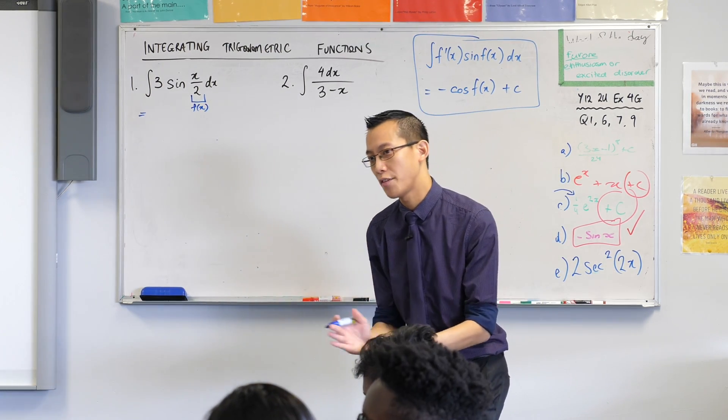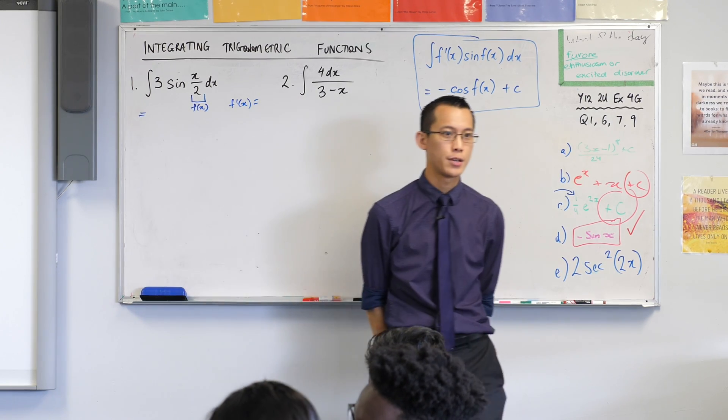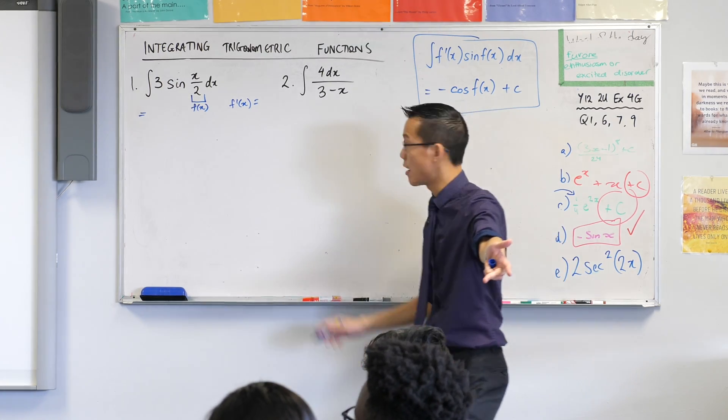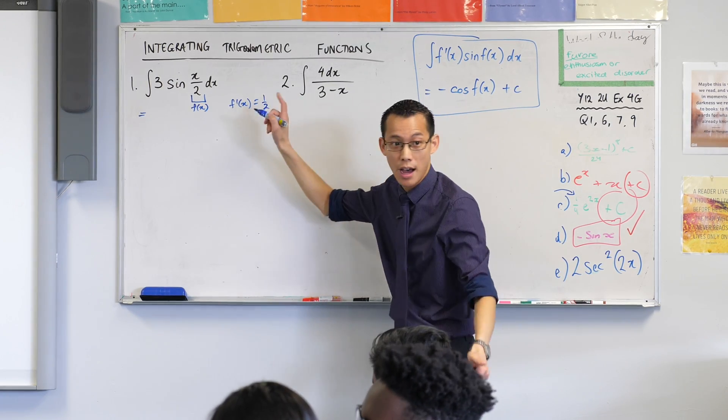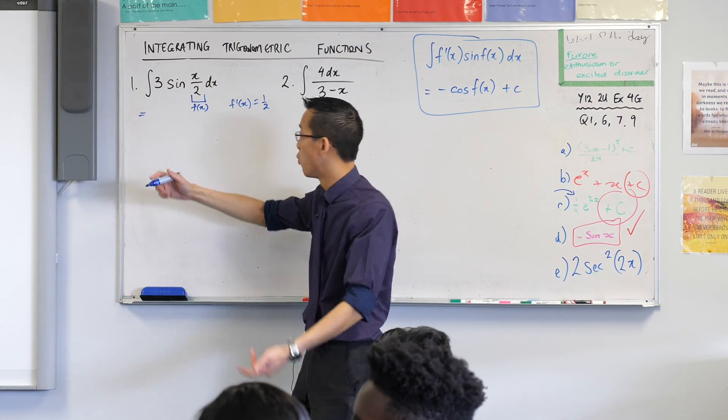Now if that's f of x and if it helps you, even write it here on the side. What should f dash be if that's f of x? It's a half, right? Jermaine is exactly right. I want a half to appear here. Only problem is there's a 3 there instead. What a jerk.